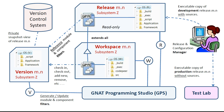Here's a diagram of the architecture used to facilitate the development strategy presented in this tutorial. W, R, and V are logical disk drives mapped to the workspace, release, and version directories respectively. These directories represent the state of the software system at any given time for a specific version of a specific subsystem.